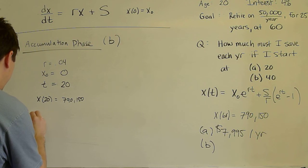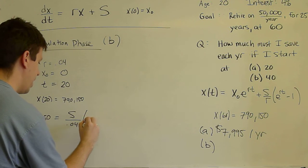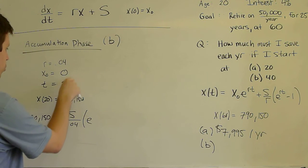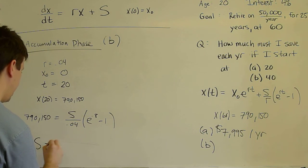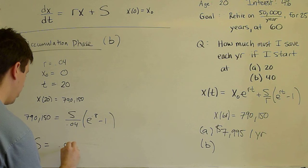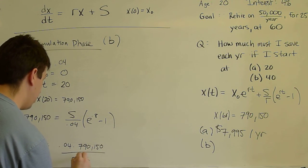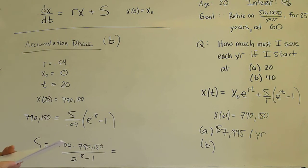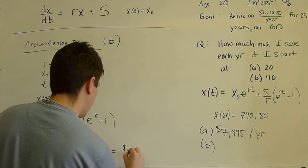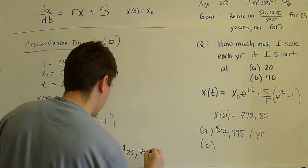So we put in everything the same, 790,150. Again, S is unknown. Again, r is 0.04. Now, e to the rT is 20 times 0.04. That's e^0.8 - 1. So S is 0.04, 790,150 divided by (e^0.8 - 1). And plugging that into your calculator, you get the rather larger number of $25,789 per year.